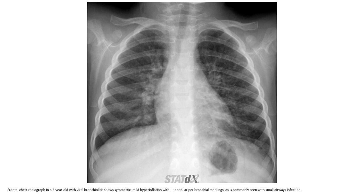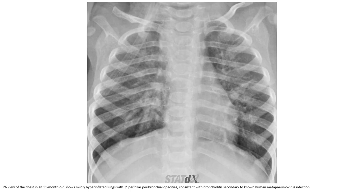This is a chest radiograph with viral bronchiolitis, showing symmetric bilateral hyperinflation with increased peribronchial markings, as commonly seen with small airway infection. Again, just a chest radiograph showing mildly increased hyperinflation along with increased peribronchial markings, consistent with bronchiolitis secondary to non-respiratory metapneumovirus infection.